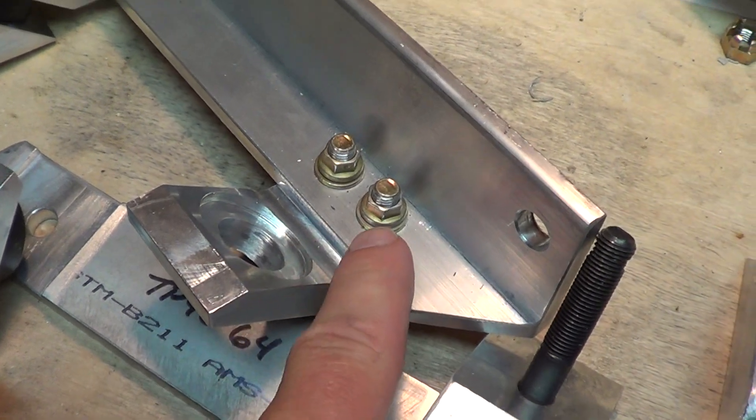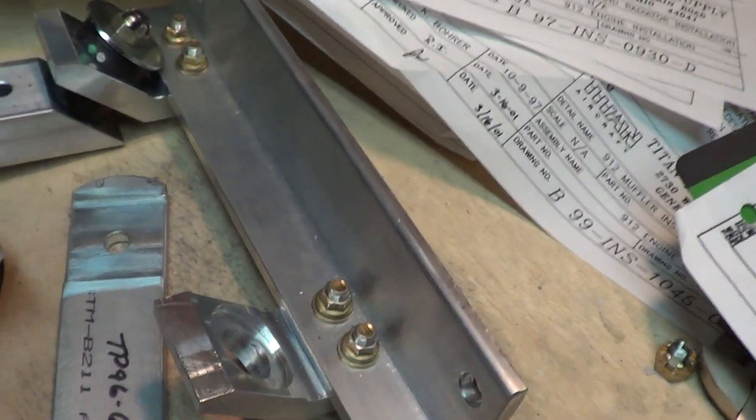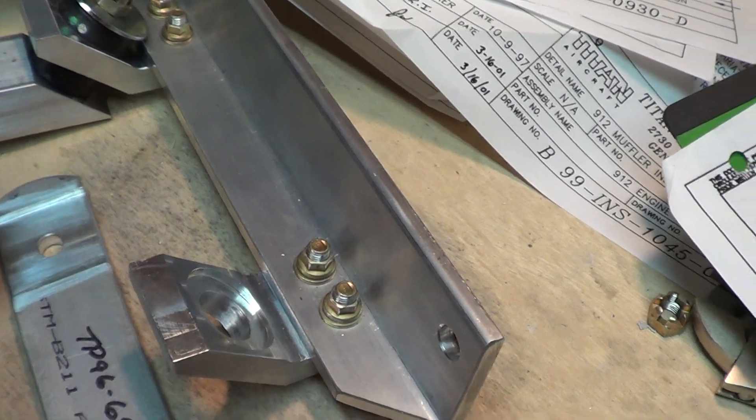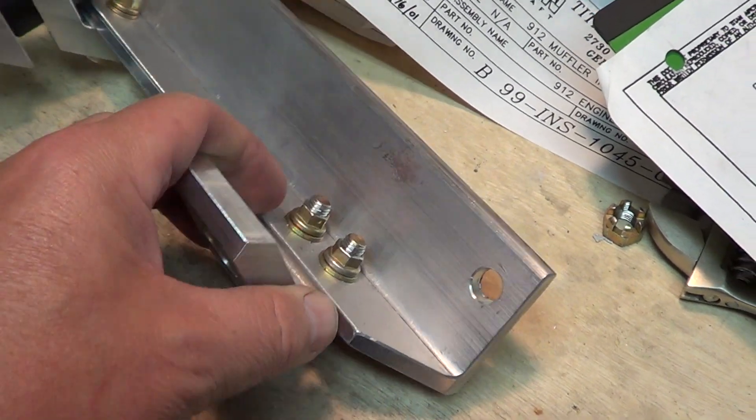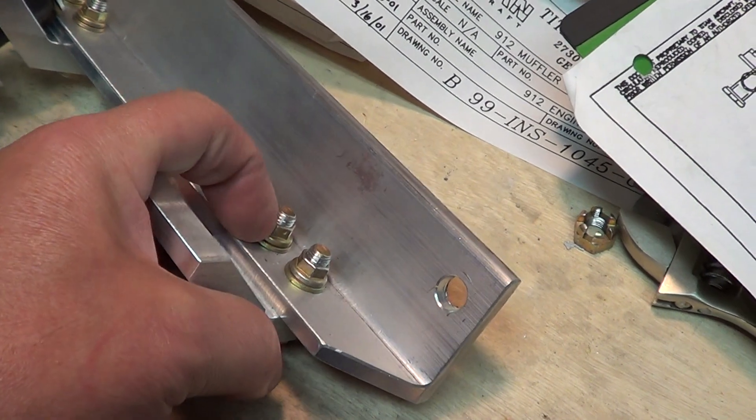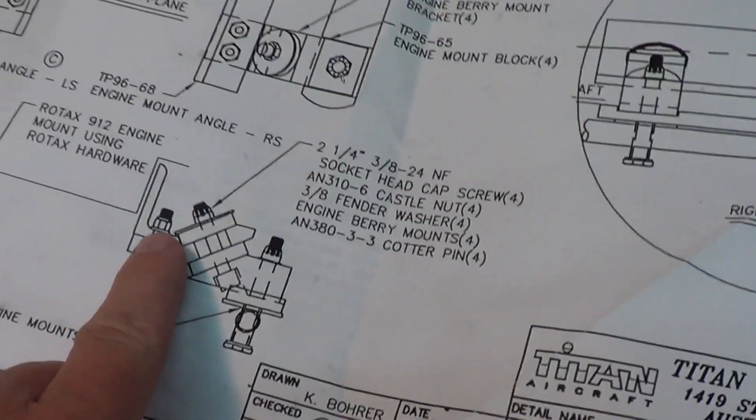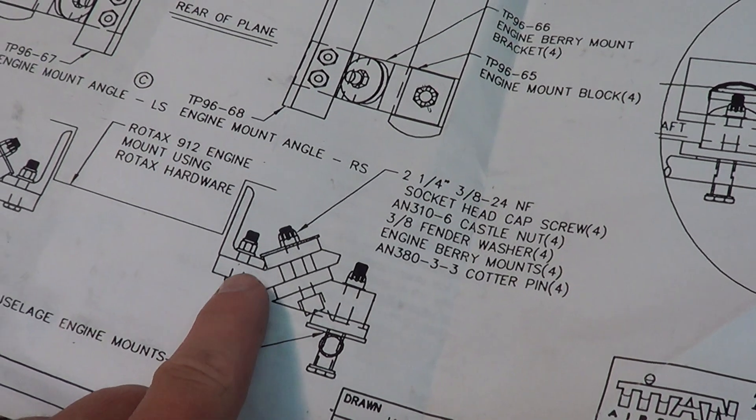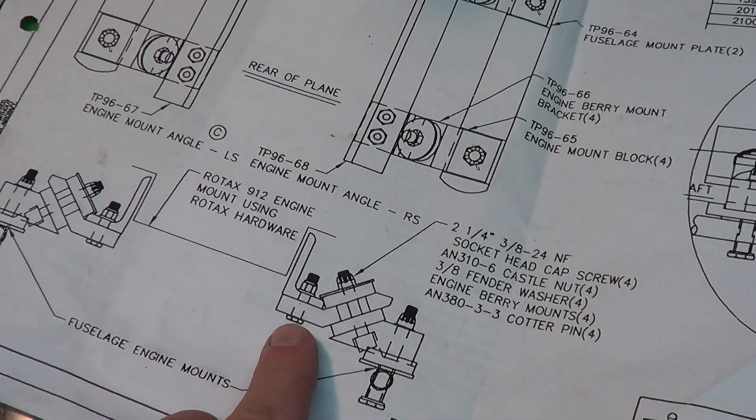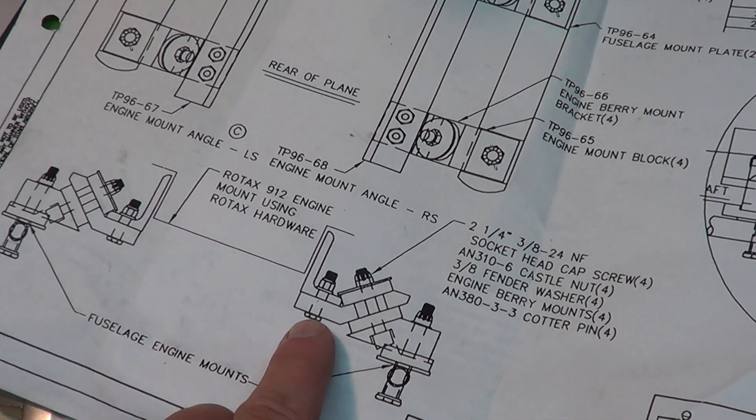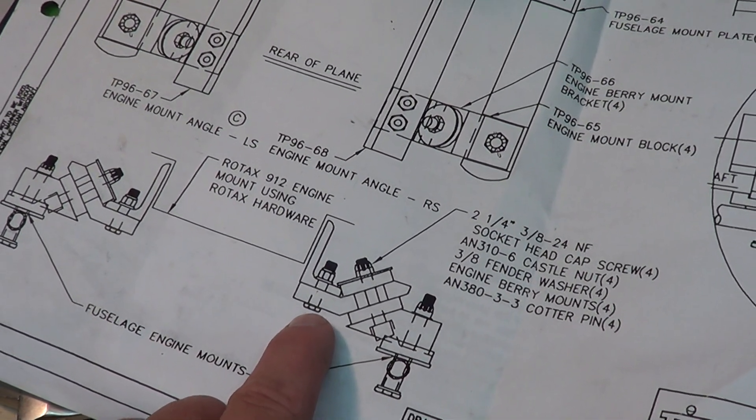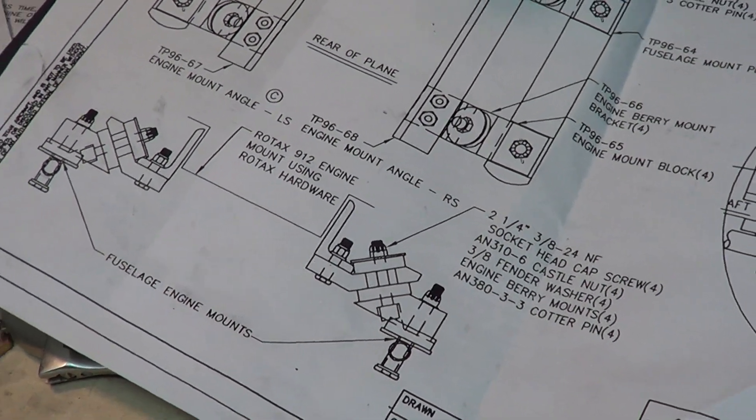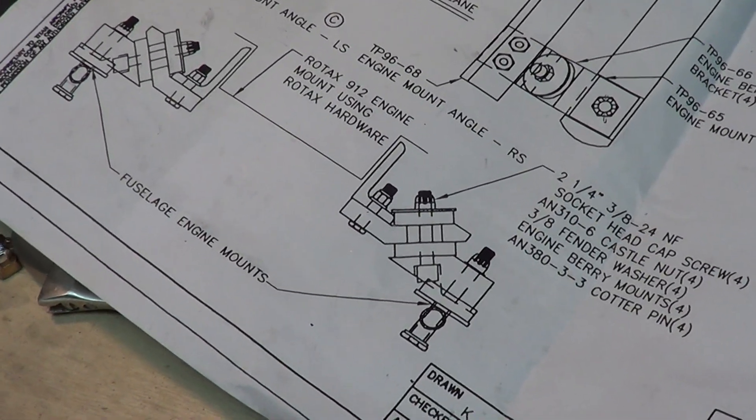The other question is about these bolts here. I've got them in as the drawing shows with the nuts on the top. That seems backwards to me. It seems like if the nut comes off, the bolt will fall out. So it's better to have the bolt on the top, the nut on the bottom. But there may be some reason why it's like that that I don't know.